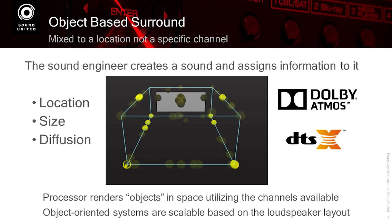Once that information is embedded into the signal, the processor in your receiver looks at the information about the objects. And based on the number of channels you have in your system — 5.1.4, 7.1.6 — it utilizes the channels available to put that object in your room at the size, the scale, and with the amount of focus that the sound engineer intended.